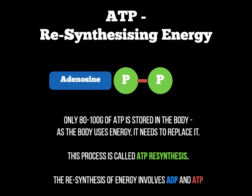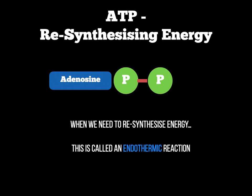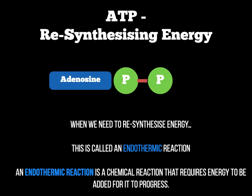ATP resynthesis involves both ADP and ATP. When we add that phosphate back on to adenosine diphosphate — on screen you've got adenosine and two phosphates, so ADP — if we add the phosphate back, we call that an endothermic reaction. This is the opposite of an exothermic reaction. The definition: a chemical reaction that requires energy to be added for it to progress. So we add that phosphate on and we've now got ATP again through an endothermic reaction.